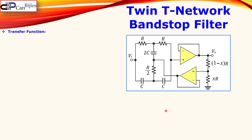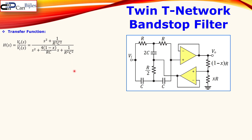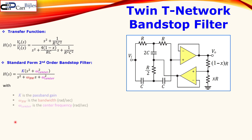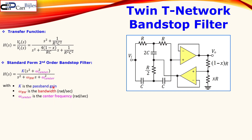We have here the transfer function for this circuit, given by Vo over Vi. It has a second order term in the numerator and also a second order term in the denominator. The standard form of a second order band stop filter is given by this expression. You see the parameters: k, which is the passband gain at DC and also at high frequencies; omega_bw, which is the bandwidth in radians per second; and omega_center, which is the center frequency, also called the resonant frequency, again in radians per second.